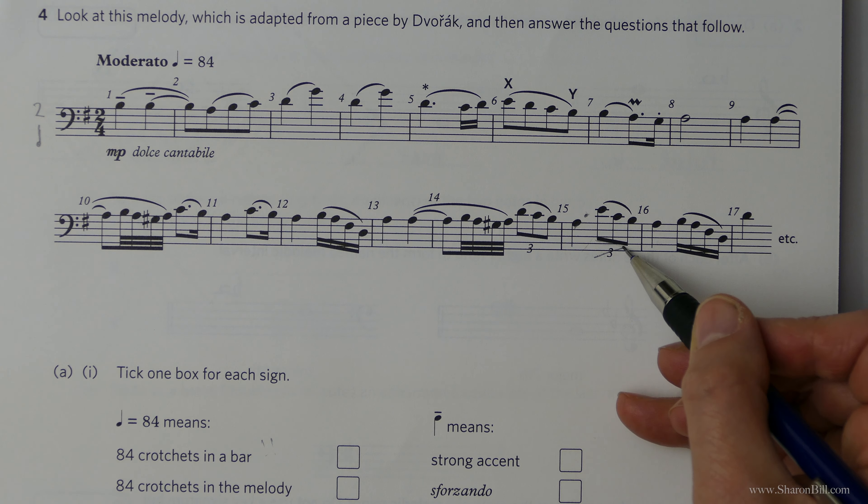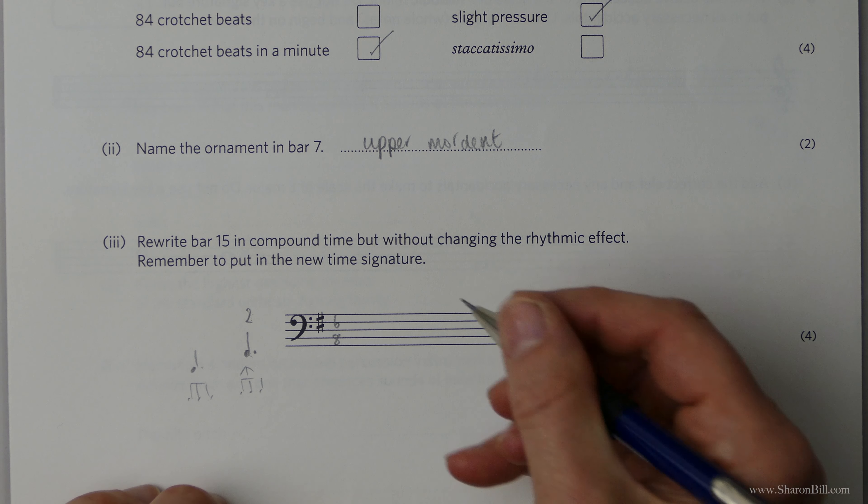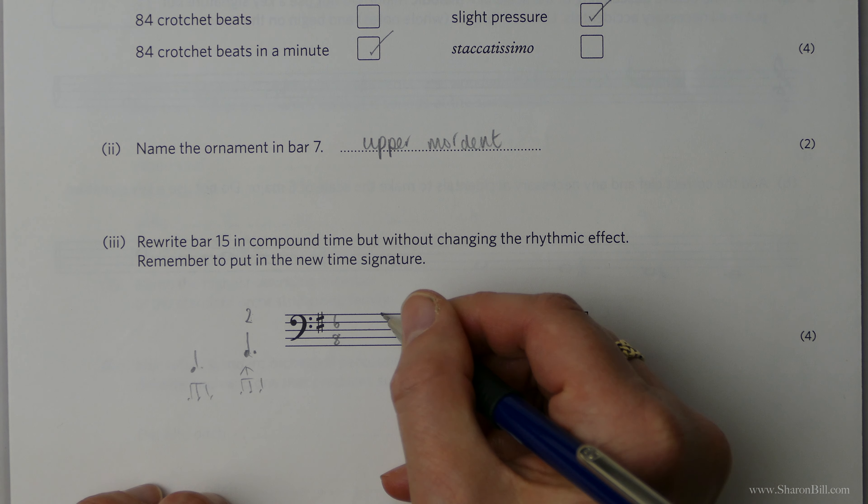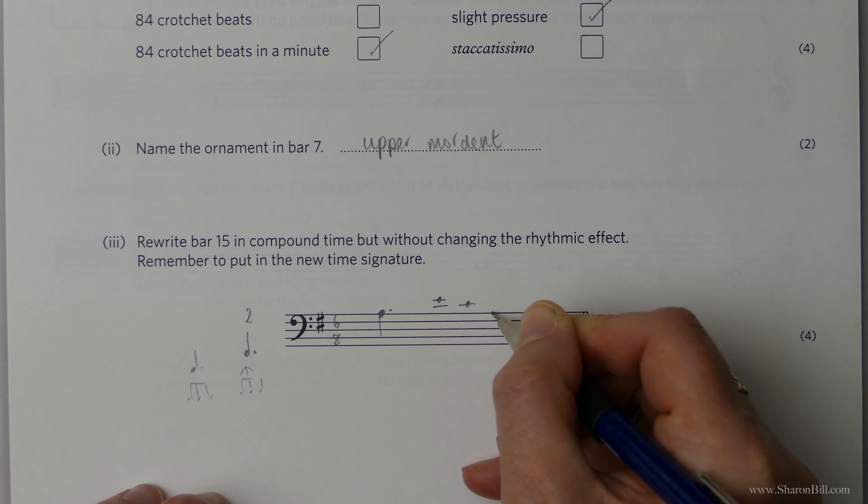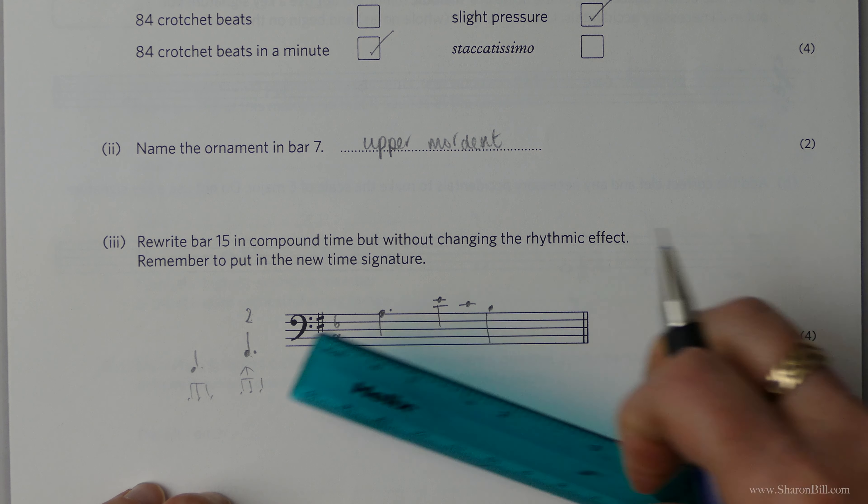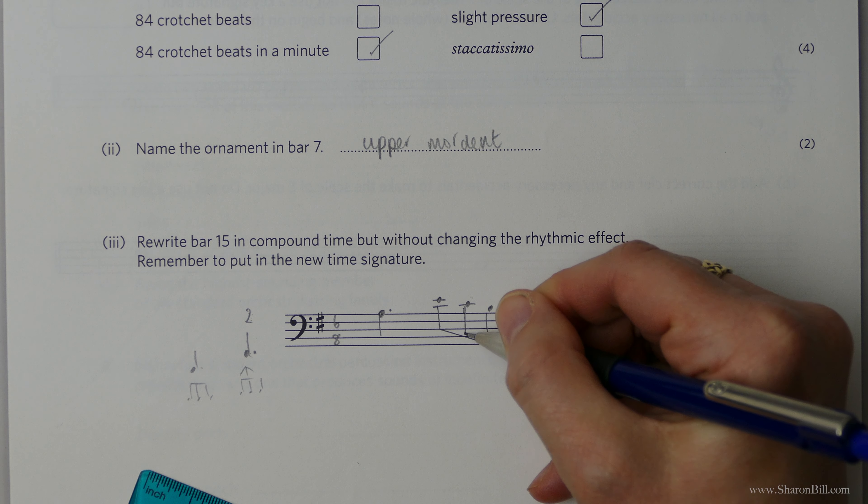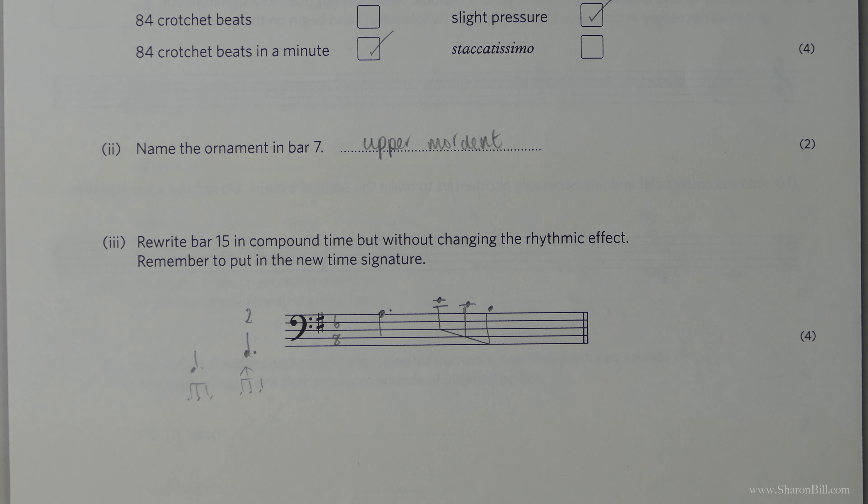So that's soon done. So now we just need to write that out. So we have our A dotted and then E, C, B. Beam those together. By all means, use a ruler. And that's that completed.